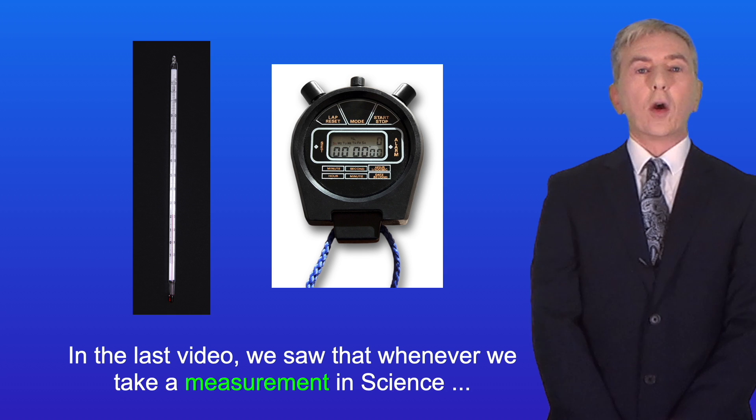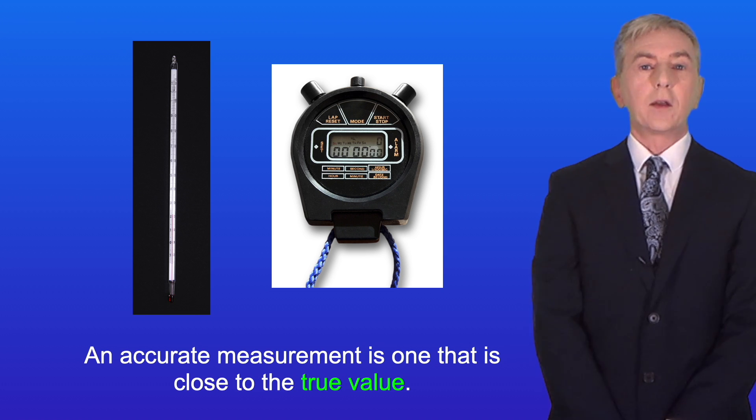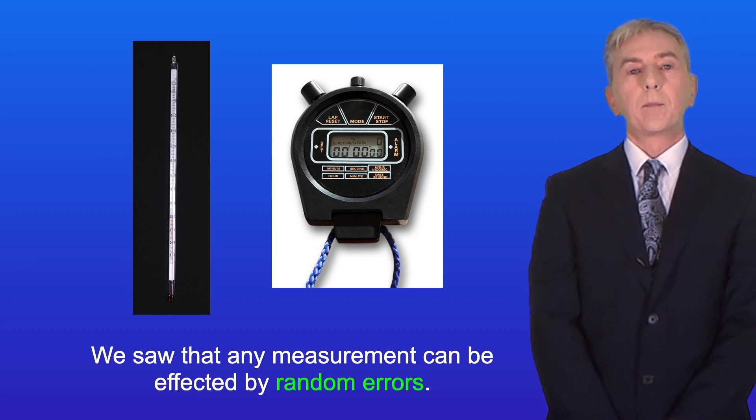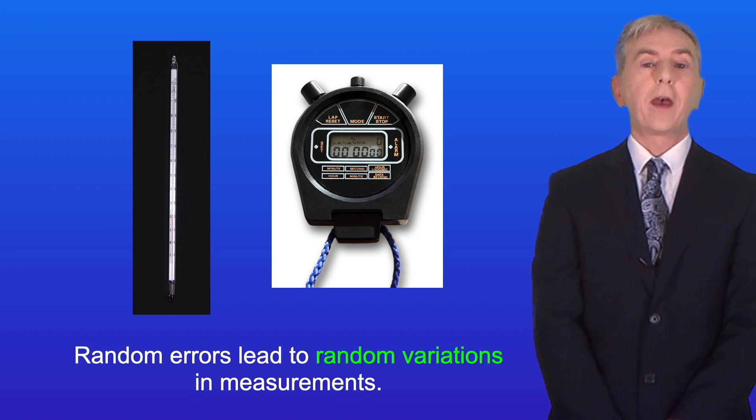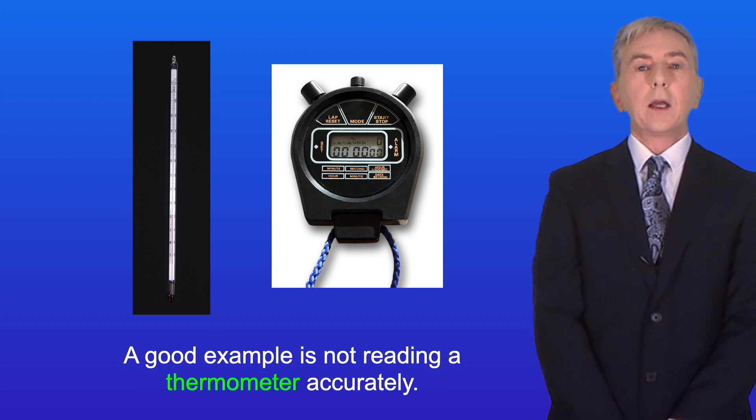In the last video we saw that whenever we take a measurement in science we want our measured value to be accurate. An accurate measurement is one that's close to the true value. We saw that any measurement can be affected by random errors. Random errors lead to random variations in measurements and one cause of random errors is using equipment incorrectly. A good example is not reading a thermometer accurately.